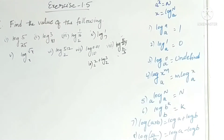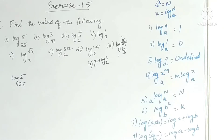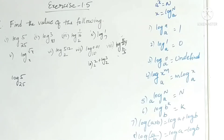Now we will see the first problem in Exercise 1.5 of Real Numbers: find the value of the following. There are a total of nine problems. We have to find these values. The first one is log 5 base 25. You can solve this very easily. Most of the time students get confused, but without confusion you can solve this, so please watch this video very carefully.